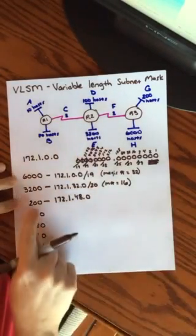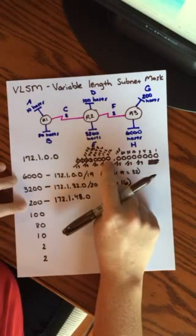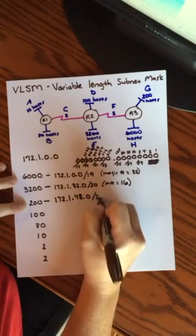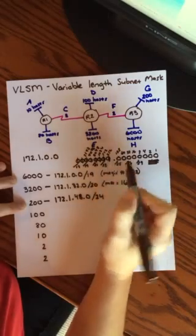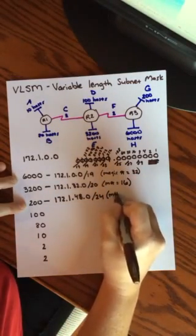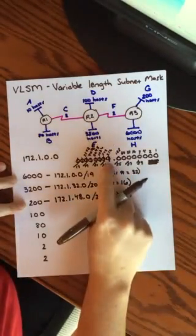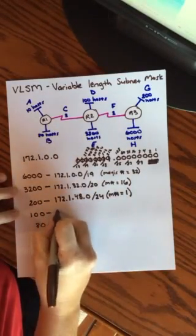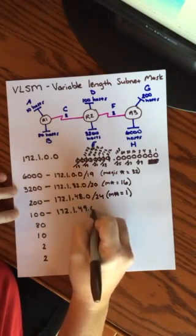And then you start all over again. Now I need 200 addresses. So if I look up here, slash 24 gives me a range of 256. So that's what I need, slash 24. So I'll go all the way up to the 24. I like to sort of follow along so I know where I'm at, so I can keep my magic number straight. The magic number equals 1. The value of that bit right there is 1. So I'm going to add 1 to my third octet. So my next network will be 172.1.49.0.